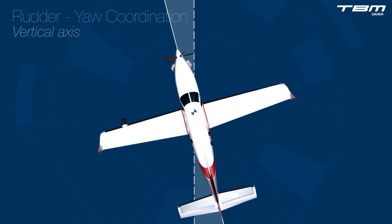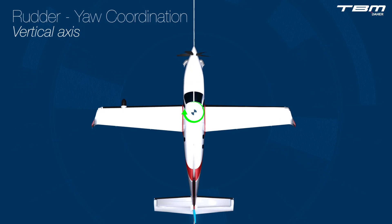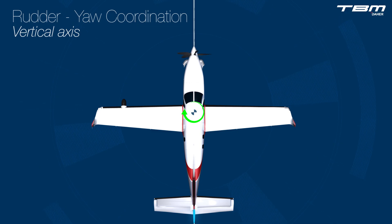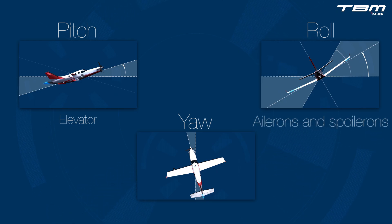Yaw coordination about the vertical axis is maintained with the rudder. Adjusting the airplane's orientation with the wrong primary flight control leads to uncoordinated flight. The primary flight control for pitch is the elevator. The primary flight controls for TBM roll control are the ailerons and interconnected spoilerons. The most neglected primary flight control is the rudder, which either maintains or returns the aircraft to coordinated flight.